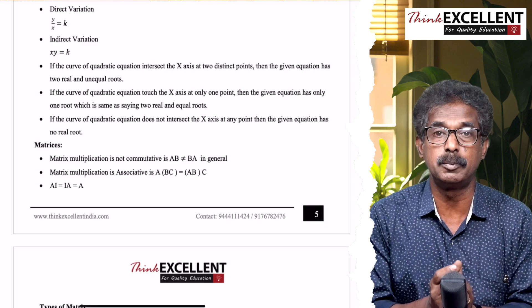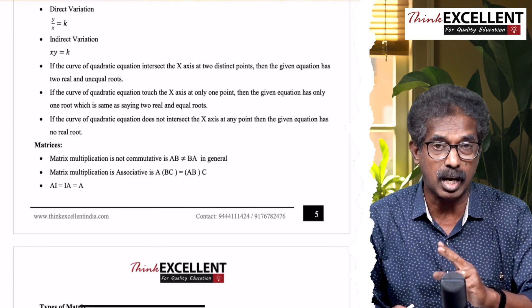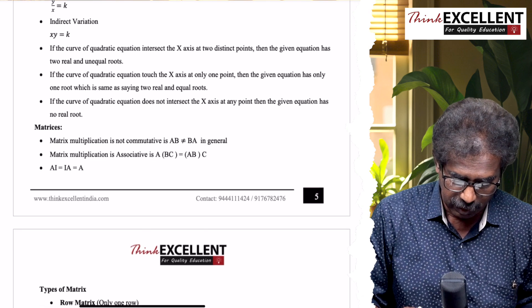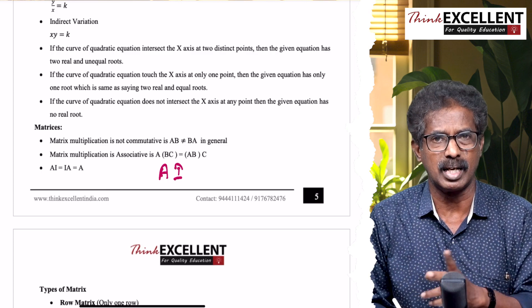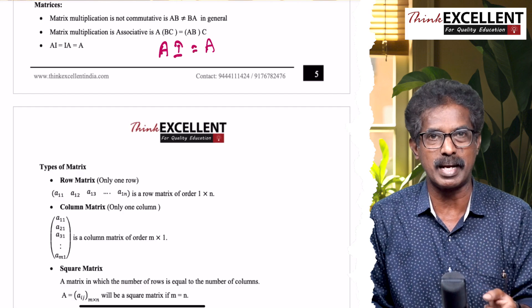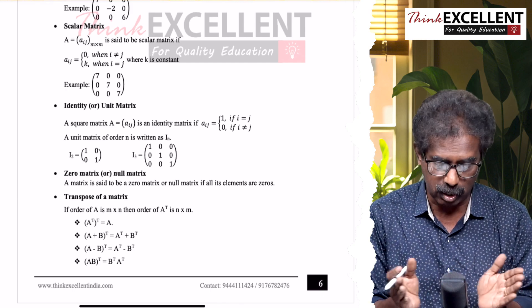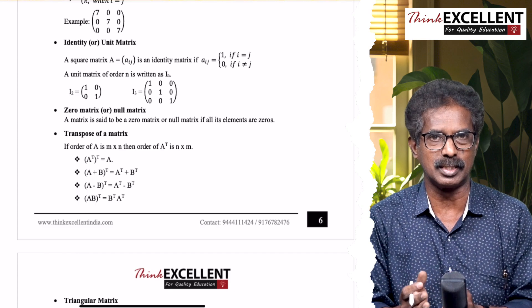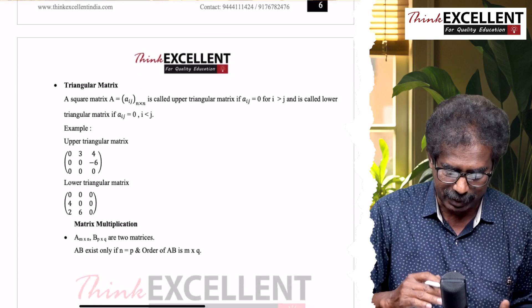Matrices - it is an arrangement of elements in rows and columns. Matrix multiplication is very important. Matrix multiplication is not commutative in general, but it is associative. I is the identity matrix. A × I = A. I is like 1, 5 × 1 = 5. Types of matrices: row matrix, column matrix, square matrix, diagonal matrix, scalar matrix, identity matrix - all these you go through.